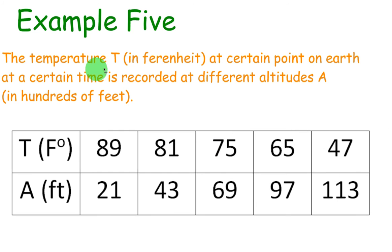All right, let's take a look at another example. It says the temperature T in Fahrenheit at a certain point on Earth at a certain time is recorded at different altitudes A in hundreds of feet. So let's read this chart and see what it means.